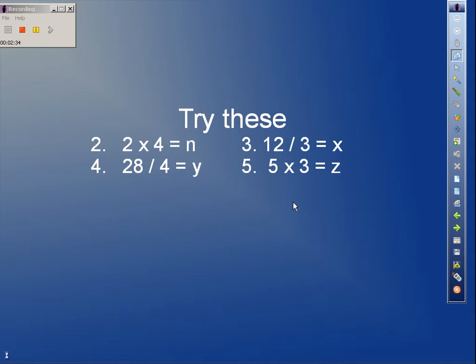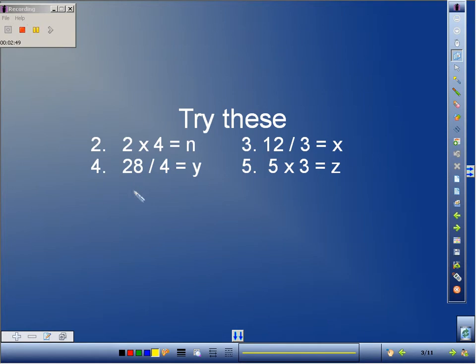Here's some more that we can try. Let's try number 2 here. Let's try 2 times 4 equals n. Let's see what we can solve for n and see if we can also write an inverse operation. 2 times 4 will equal 8, so n will equal 8, and then our inverse operation will be 8 divided by 4 equals 2.